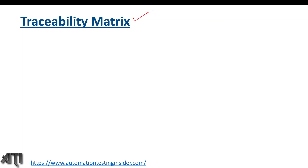Hello guys, welcome back to another video of Automation Testing Insider. Today I am going to talk about an important topic — the traceability matrix. What do we mean by traceability matrix? It is the mapping of requirements to the test cases. Whenever we get the requirement and start the testing process, it is a document where we map requirements to the scenarios, and from scenarios to test cases.